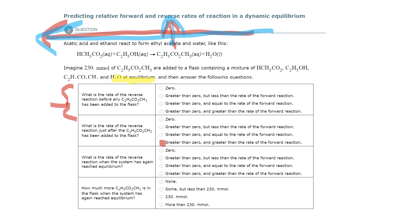Greater than zero and equal to the rate of the forward reaction — that's that fourth one. What is the rate of the reverse reaction when it has again reached equilibrium? There's always going to be at least one, if not two, where it says it is at equilibrium. You know at equilibrium the rate of the forward is the same as the rate of the reverse reaction, and it's dynamic — meaning snowballs are constantly going back and forth. So the rate of the reverse reaction is going to be greater than zero and equal to the rate of the forward reaction.